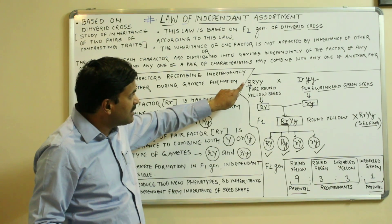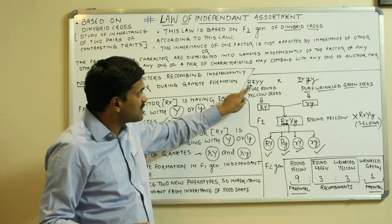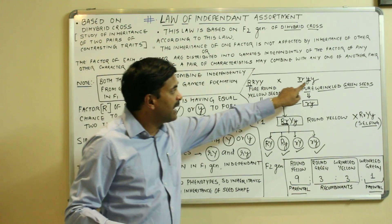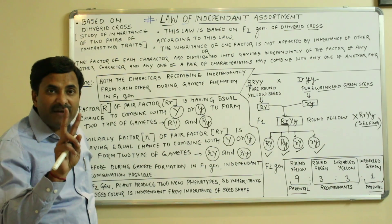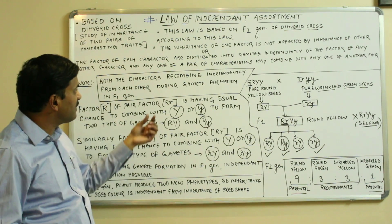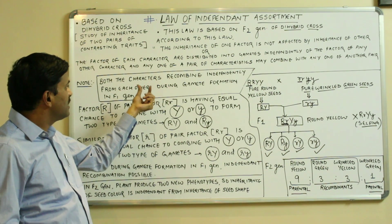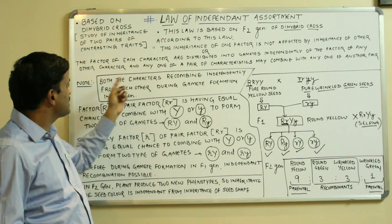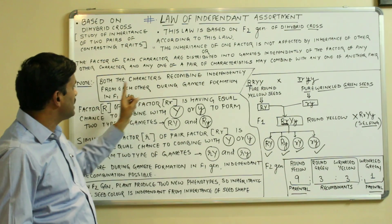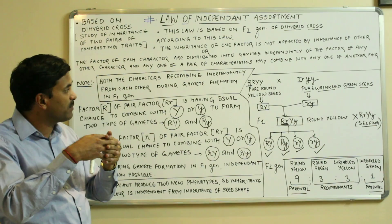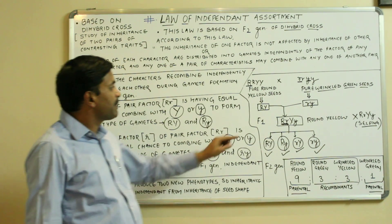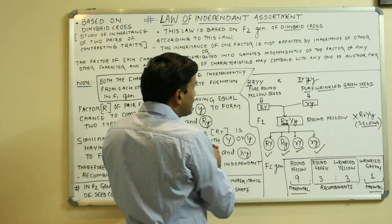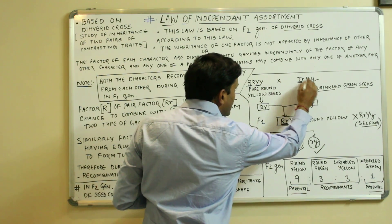I have taken capital R, capital R, capital Y, capital Y. Capital R is for the round seed and small r is for the wrinkled seed. Capital Y is for the yellow seed and small y is for the green seed. So I have taken two pairs of contrasting characters. I want to see when these characters will recombine — this is one factor and this is another factor, this is one factor and this is another factor.